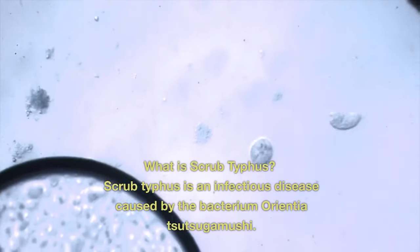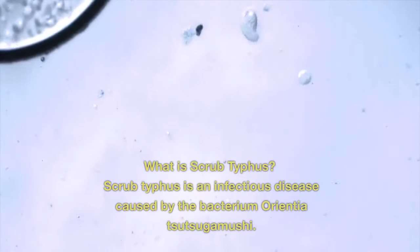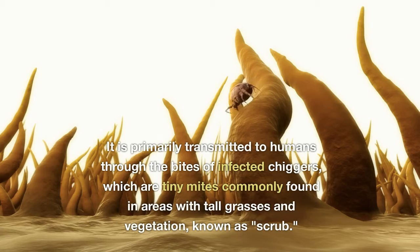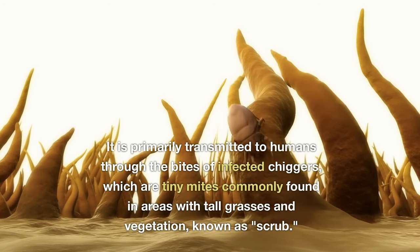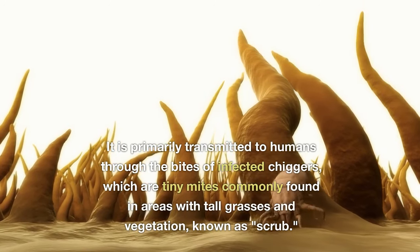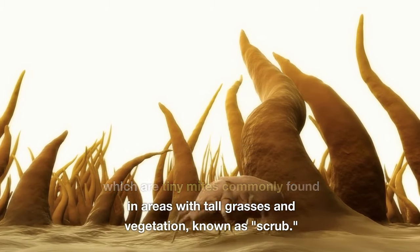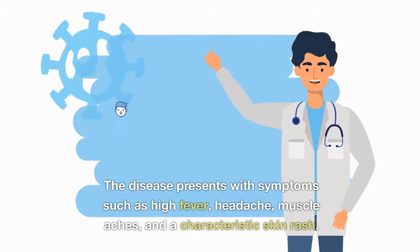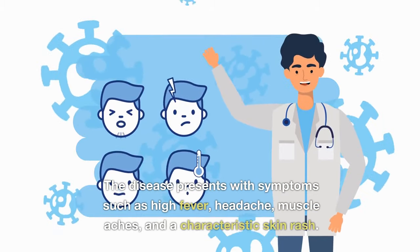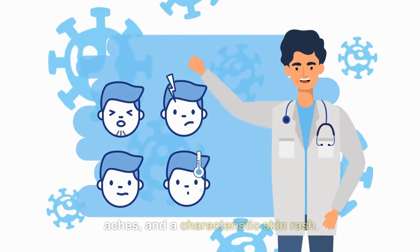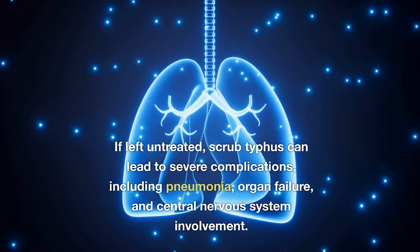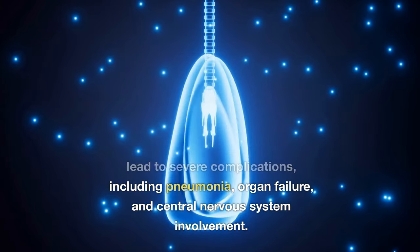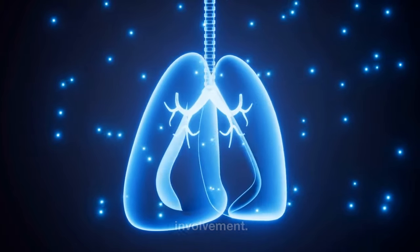What is scrub typhus? Scrub typhus is an infectious disease caused by the bacterium Orientia tsutsugamushi. It is primarily transmitted to humans through the bites of infected chiggers, which are tiny mites commonly found in areas with tall grasses and vegetation, known as scrub. The disease presents with symptoms such as high fever, headache, muscle aches, and a characteristic skin rash. If left untreated, scrub typhus can lead to severe complications, including pneumonia, organ failure, and central nervous system involvement.